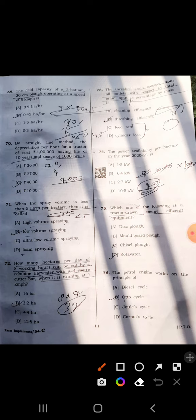Sixty-ninth: the field capacity of a three-bottom 30-centimeter plow operating at speed of 5 kilometer per hour is 0.45 hectare per hour.